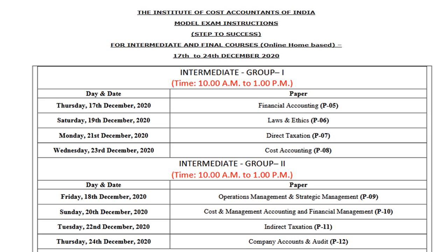Starting with the intermediate Group 1 and Group 2 examinations for the model test exam. The dates are from 17th to 24th December 2020 and the timing is from 10 a.m. to 1 p.m. For Group 1, the dates are 17th, 19th, 21st and 23rd December 2020 for papers 05, 06, 07 and 08. For Group 2, the dates are 18th, 20th, 22nd and 24th for papers 09, 10, 11 and 12. The papers for Group 1 and Group 2 are on alternative days — if on 17th the paper is of Group 1, on 18th the paper will be of Group 2, and so on.